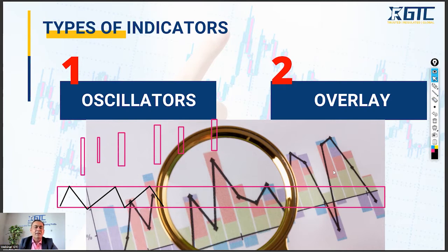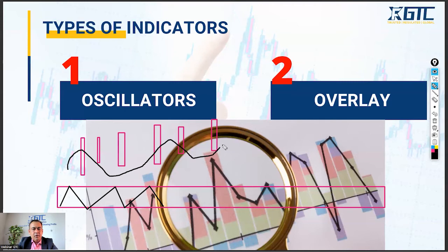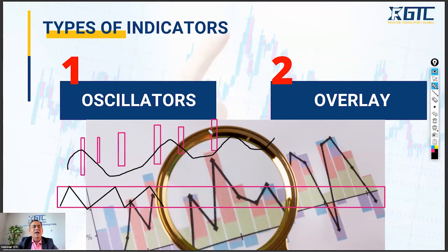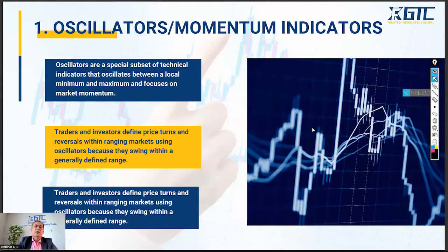Overlay indicators, as the name says, are overlaid on the candlesticks themselves. We have candles and we'll have indicators plotted on the candlesticks — they appear on or around the candlesticks, overlaid on the price action itself. So a second window holds oscillating indicators, while on the same candlestick window we have overlay indicators. These are the two main types of indicators used in technical analysis.